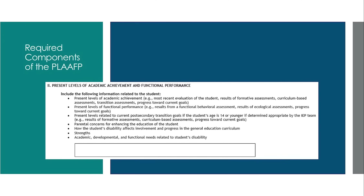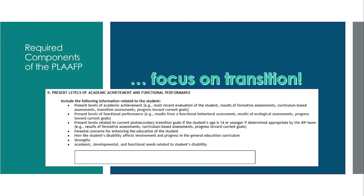All data and performance information must be based on age-appropriate assessments as discussed in the previous module. We must include summaries of each key area, keeping our focus on transition throughout. We want to keep our focus on academic and functional performance and, if necessary, information regarding the behavioral needs of the student. Academic achievement has a major impact on a student's post-school outcomes — for example, a student's reading level may impact success in post-secondary college or a training program.